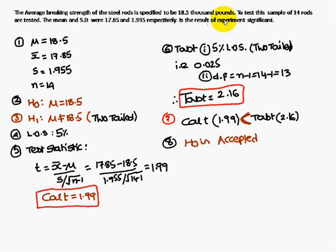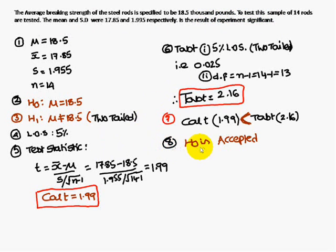Therefore H-naught is accepted, meaning the result of the experiment is not significant. The sample of 14 rods tested meets the specified mean breaking strength. H-naught is accepted.